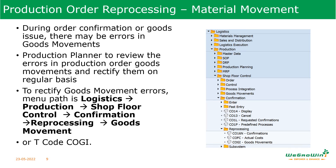Next is production order reprocessing, which means rectifying material movement errors — for example, movement type 261 or 101. When you do backflush, which is used for goods issue to the production order, or there is automatic goods receipt from the production order via control key, sometimes the system will face an issue. The stock may not be in the location, or in the material master the storage location might not have been maintained. When you confirm the order, there may be an error for these automatic movements.